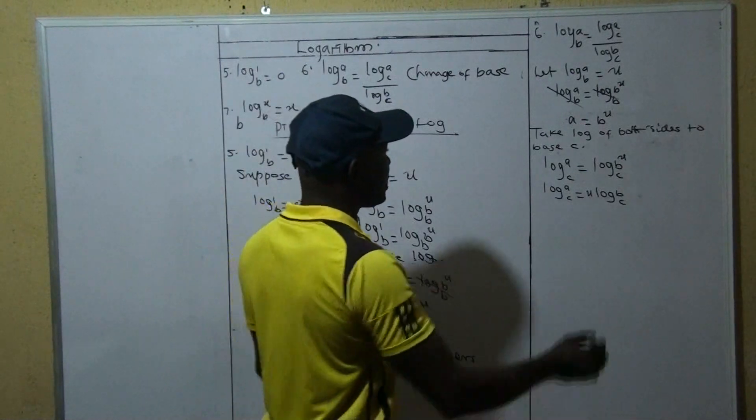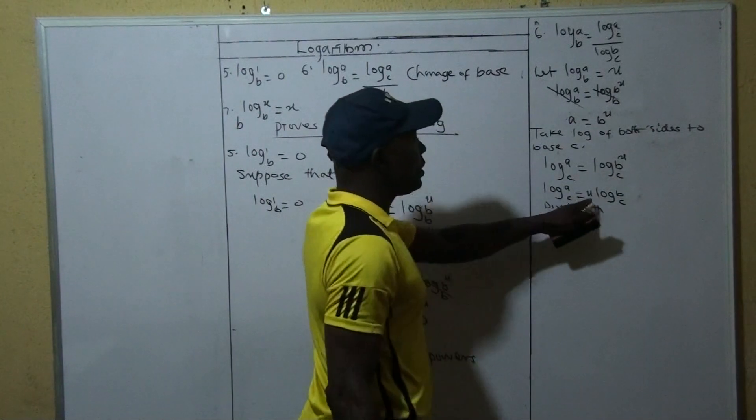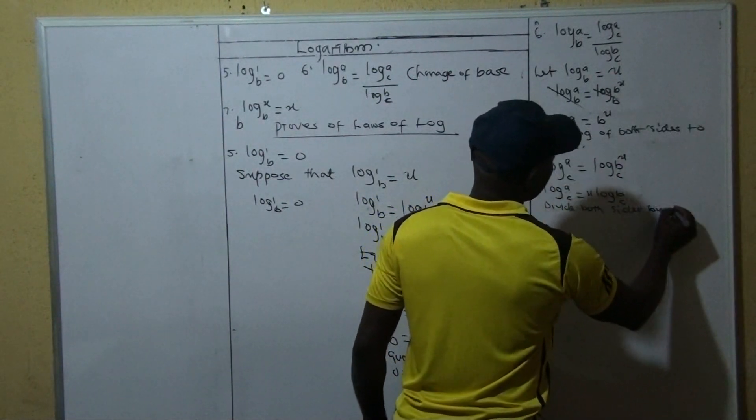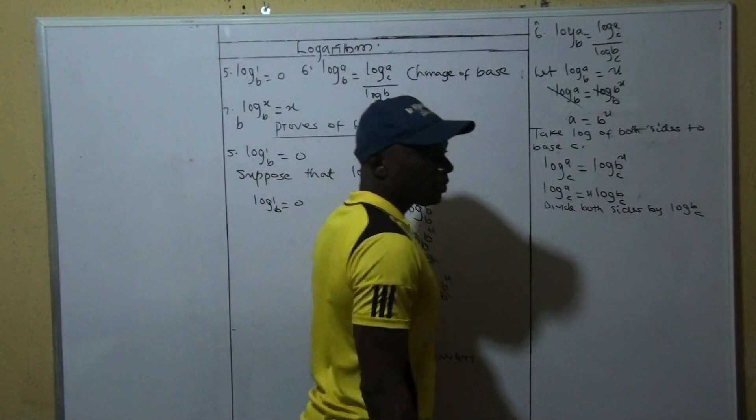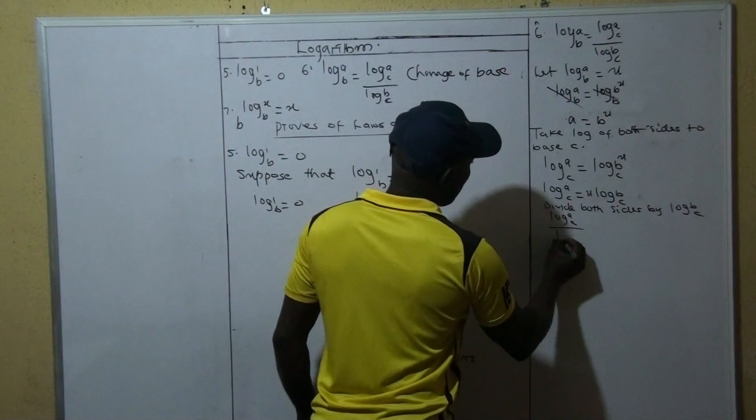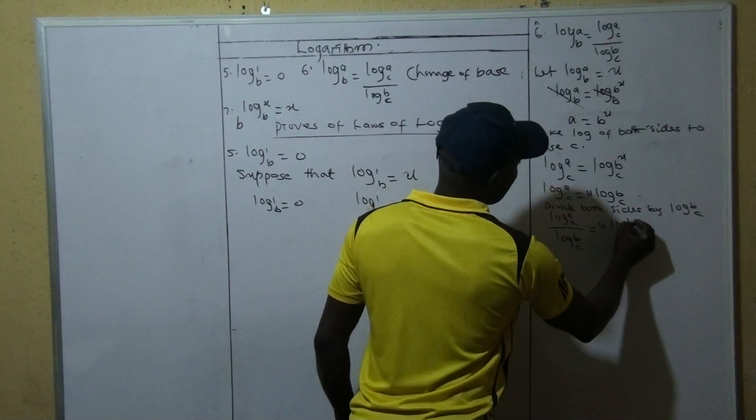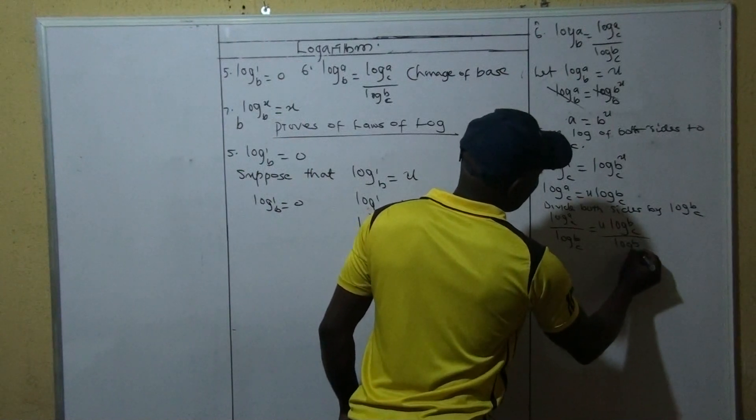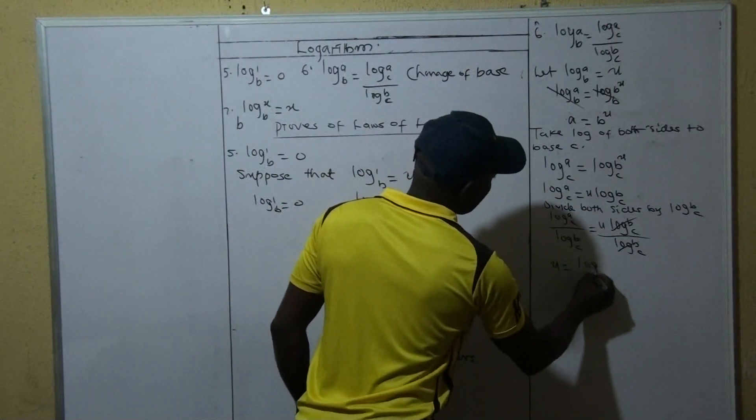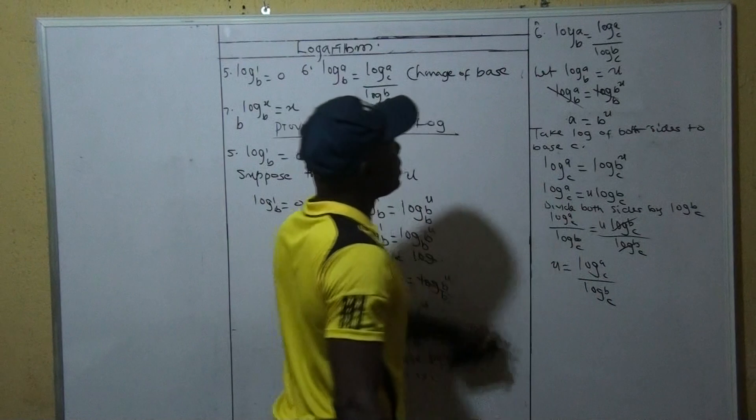So in order for us to move very fast, we can say divide both sides by, because we are trying to make U the subject of a formula. So we can say divide both sides by log B to base C. So if we do that, this becomes log A to base C all over log B to base C is equal to U log B to base C over log B to base C. So this will go with this, and your U becomes log A to base C all over what? Log B to base C, which is what we have stated here.